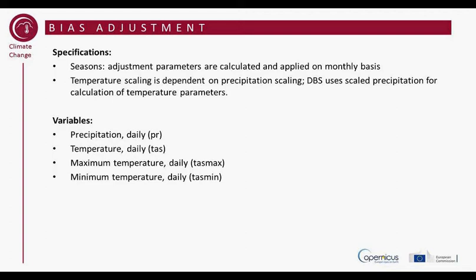Within the project, we define the seasons as months. We calculate the adjustment parameters on a monthly basis over the whole period. Temperature scaling is dependent on precipitation scaling — this method uses scaled precipitation for the calculation of temperature parameters. So we always do the precipitation adjustments first, and then the temperature. The variables we adjust are precipitation, maximum temperature, and minimum temperature, all on a daily basis.